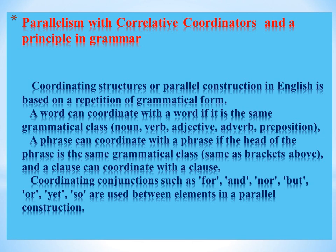Parallelism with coordinators is a principle in grammar. The parallel form is used with correlative conjunctions based on a repetition of grammatical form. A word can coordinate with a word if it is the same grammatical class: noun, verb, adjective, adverb, preposition. A phrase can coordinate with a phrase if the head of the phrase is the same grammatical class. Coordinating conjunctions such as for, and, nor, but, or, yet, so are used between elements in a parallel construction.